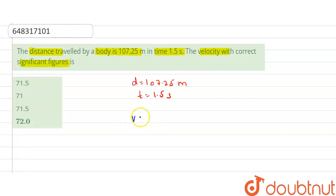So we know that velocity is given by distance upon time. Distance is 107.25 upon time is 1.5. So we get velocity 71.5 metre per second.